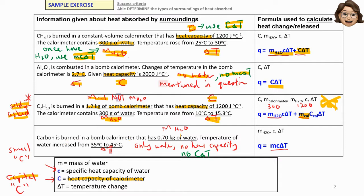The last question: carbon is burned in the calorimeter and it tells you it has water, so you can straight away write MC∆T, and the temperature of water increases. Here it only mentions water — it doesn't mention heat capacity, so there is no C∆T. Just remember you have to know your symbols very clearly and also know what is inside the question: is it water, or only the heat capacity of the calorimeter?